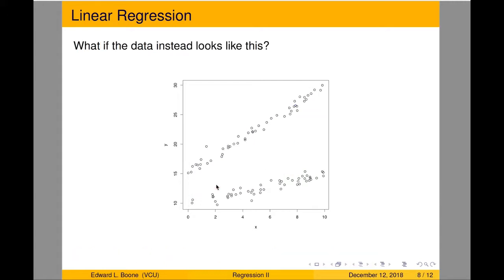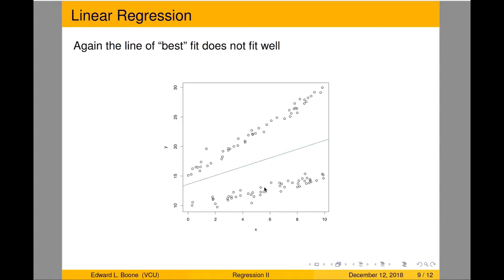Now what if our data looks like this? Now this one's a little bit different in the sense that it looks like they have different slopes as well. So if you put in the line of best fit, which seems to be a good idea - everybody just slap a line through it and see what happens. This doesn't work so well.